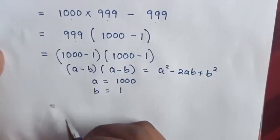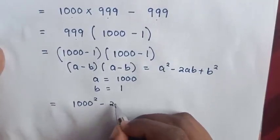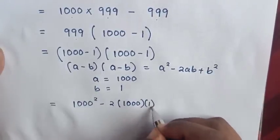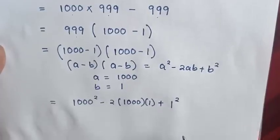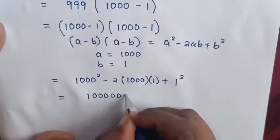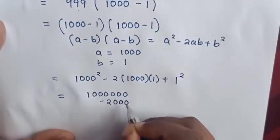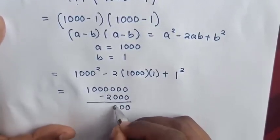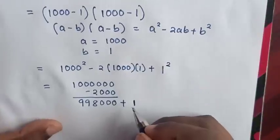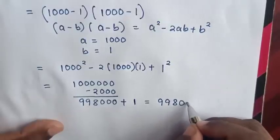Then it will be equal to a squared, which is 1000 squared, minus 2 times a (1000) times b (1), plus b squared (1 squared). So 1000 squared is 1,000,000, minus 2000, plus 1. This gives us 998,001.